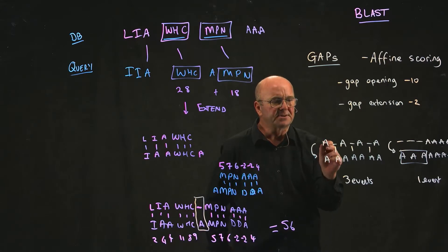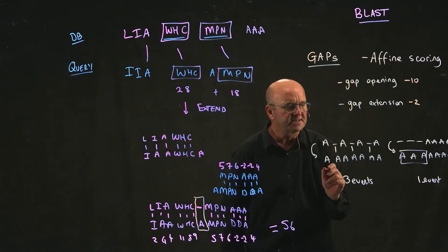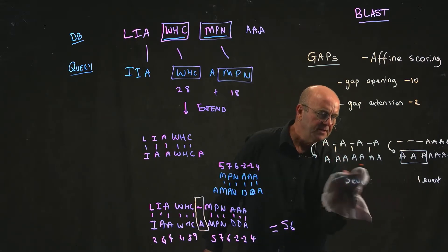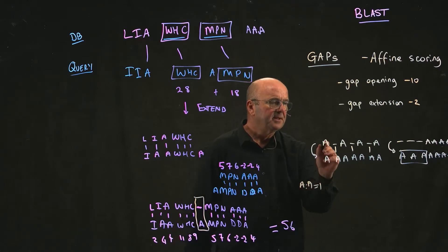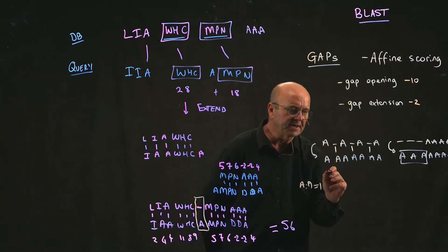So if we were to score these two alignments and let's say we just have A to A gets a score of 1. The first alignment here we would get a score of plus 1.